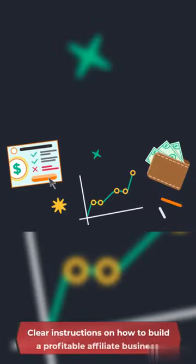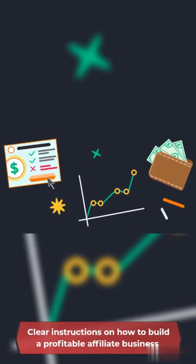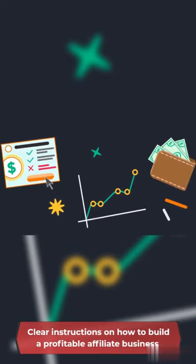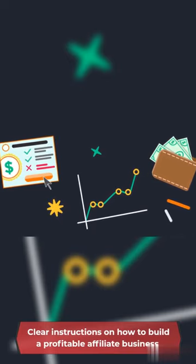It also includes a private Facebook group where you can share your success stories, ask questions, and get feedback from other members, as well as access to the Super Affiliate System software, which will show you how to take your marketing campaigns from 0 to 100 percent in just minutes.